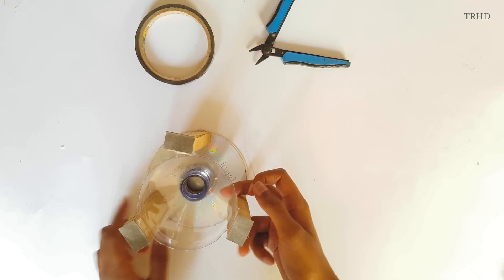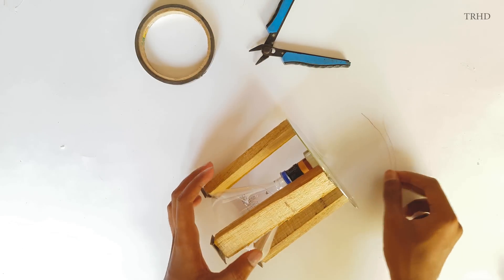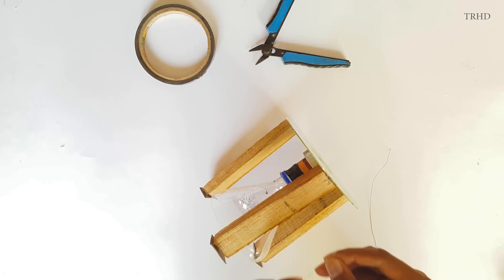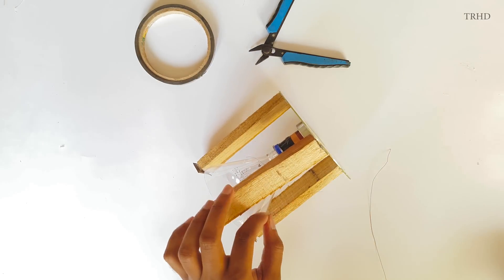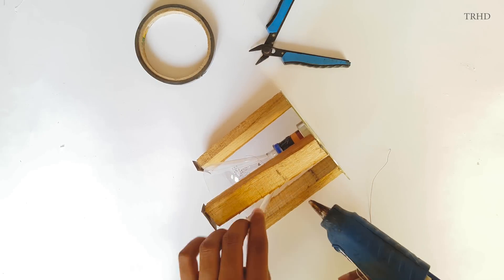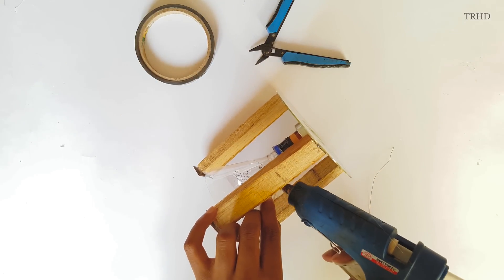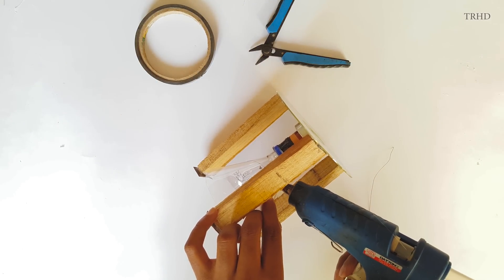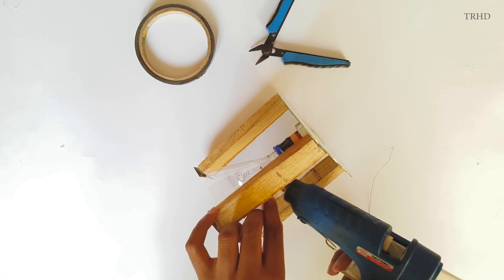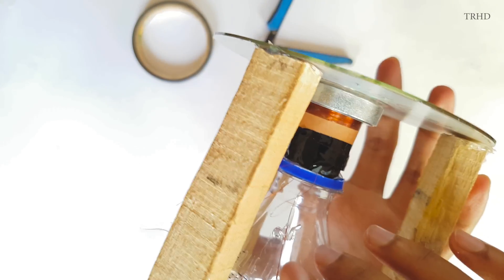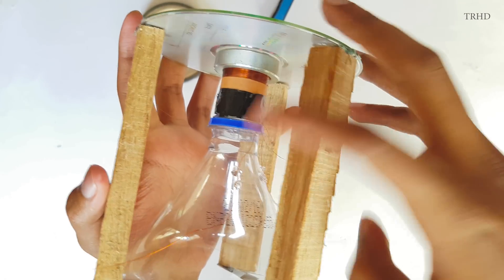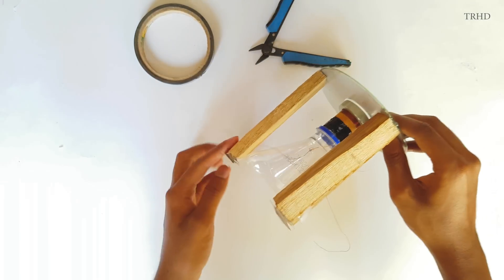Take two copper wires. We need to stick it to the plastic cone and after sticking it we need to solder them to the voice coil leads. Just take a glue gun and stick it to this plastic cone. So this is how it'll look like. You need to stick it over here. Now we need to solder this to the voice coil leads.